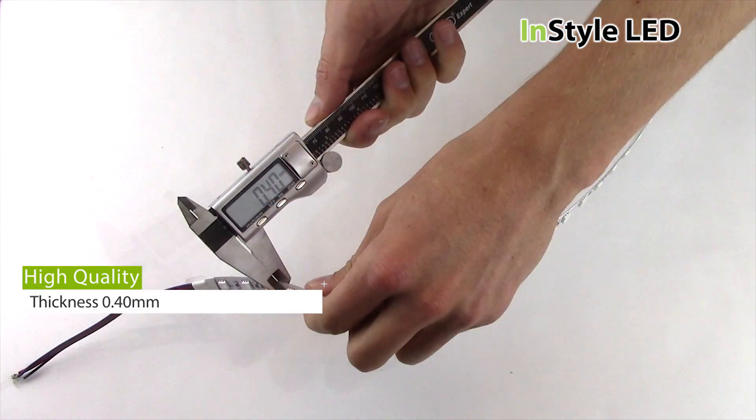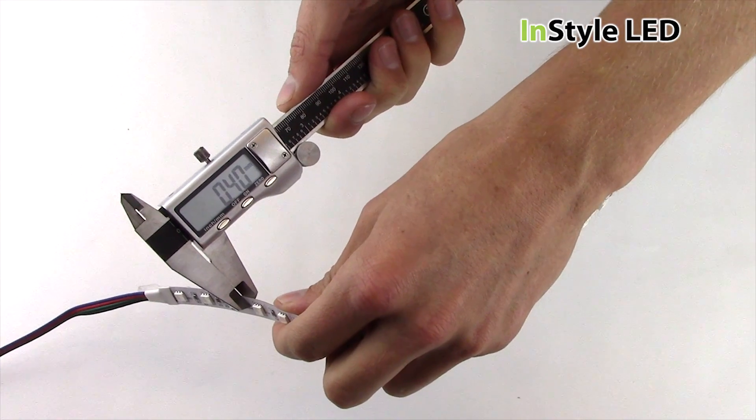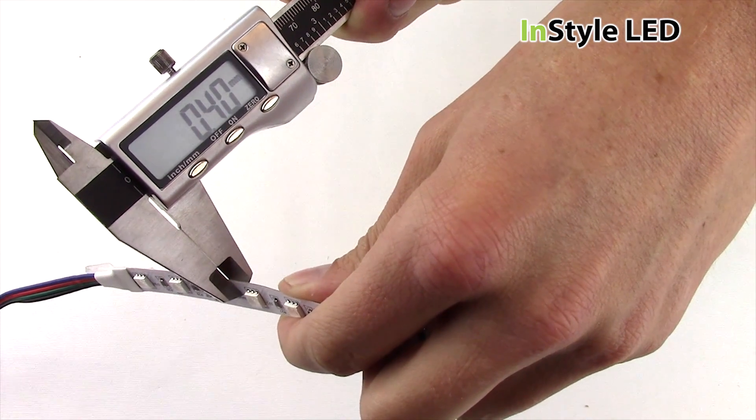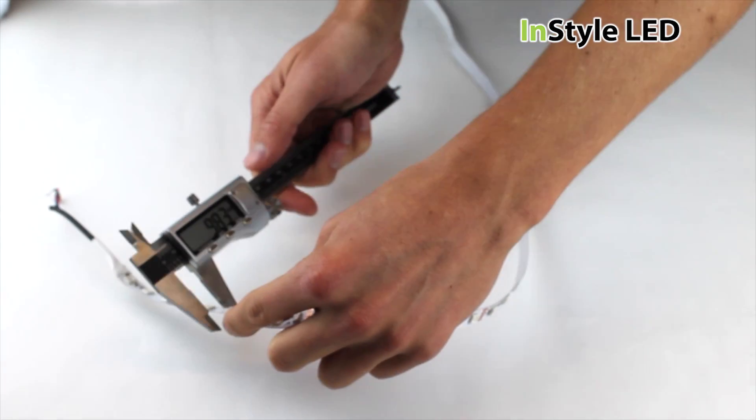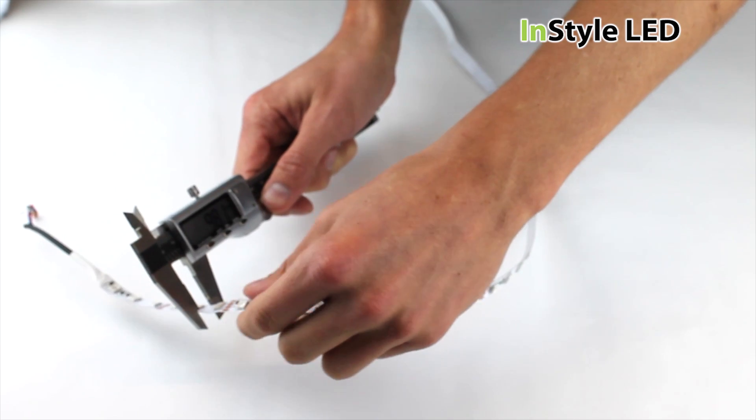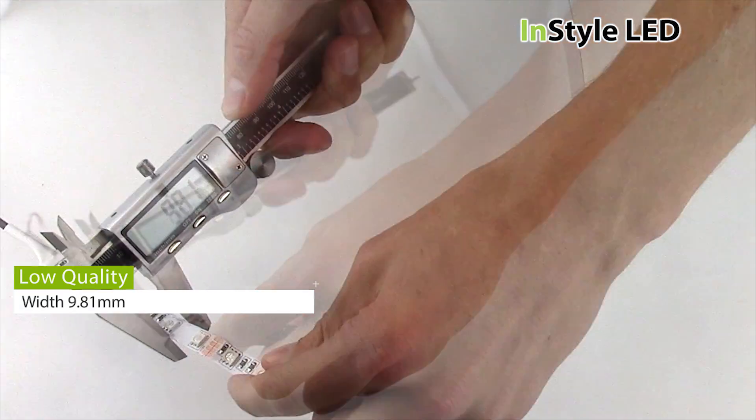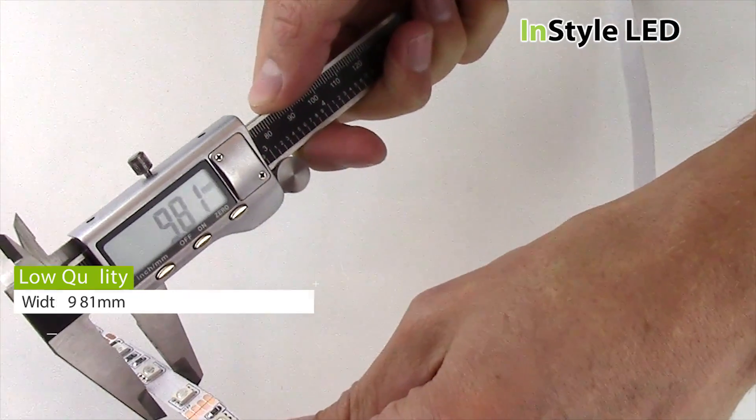The high quality LED strip uses a 12mm wide PCB and is 4mm in thickness. The low quality LED strip uses a 10mm PCB and is 3mm in thickness. This means the low quality LED strip will deteriorate in brightness a lot quicker and will not last as long as the high quality type.